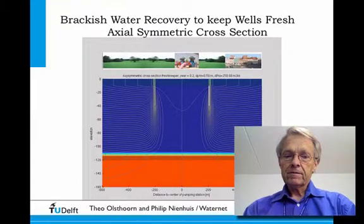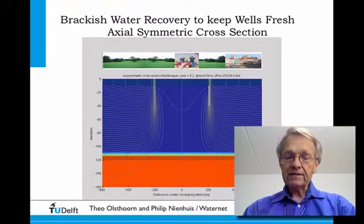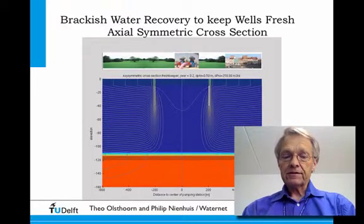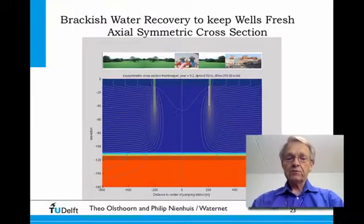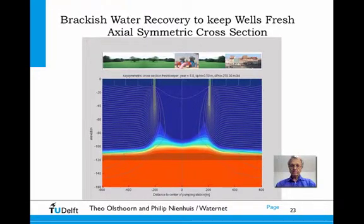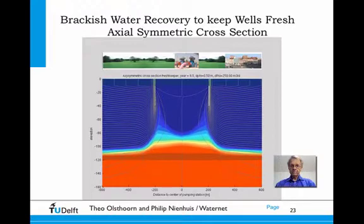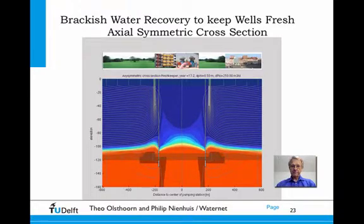The next example is a circular pumping station extracting fresh water above a brackish water aquifer while salinization occurs. At a certain moment, brackish water is extracted, desalinated, and the brine is injected below the aquitard. You can see here the extraction of brackish water and the injection of brine below the aquitard, and it does a nice job.